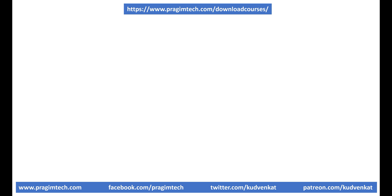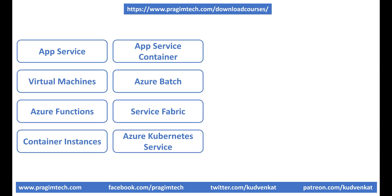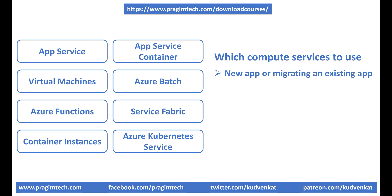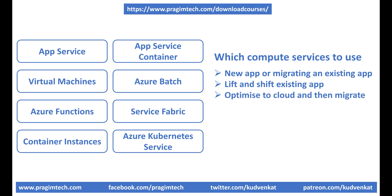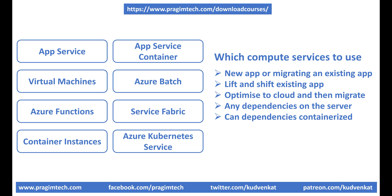Azure offers several compute services. Which compute service to use depends on several factors: Are you creating a new application or migrating an existing one? If migrating, do you want to lift and shift, or optimize for the cloud and then migrate? Does your application have any dependencies on the server? Can those server dependencies be containerized? Do you want to use a microservices architecture? Which compute service to use really depends on the answers to these questions. If your application consists of multiple workloads, evaluate each workload separately. A complete solution may require two or more compute services.